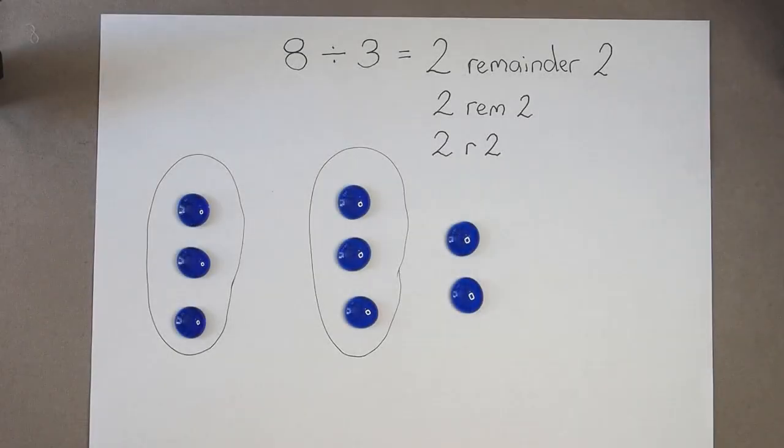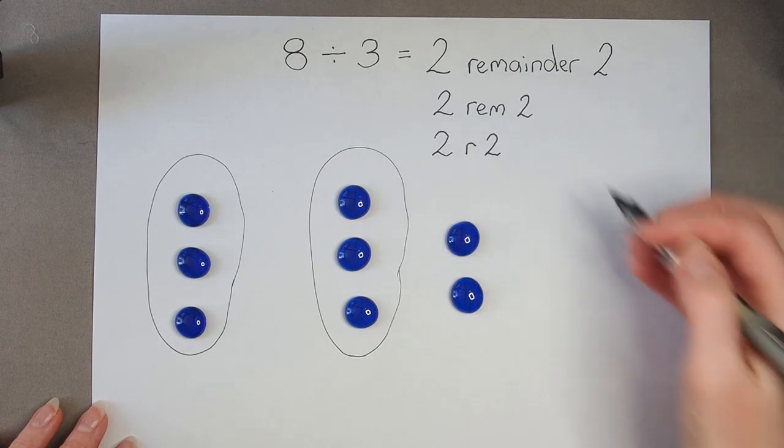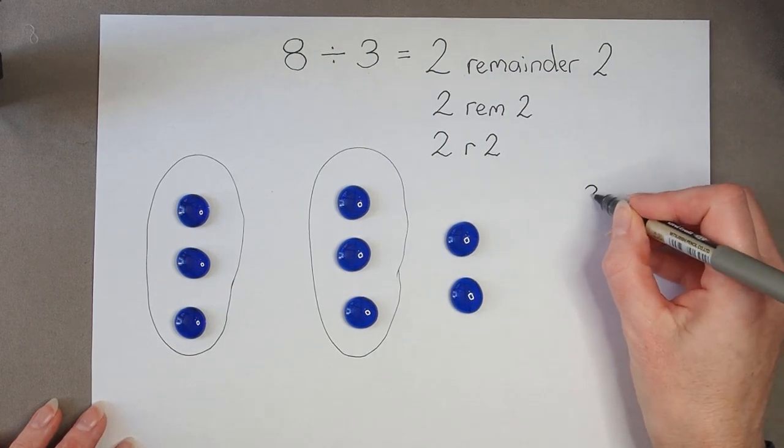So if we didn't want to use counters to count this calculation, then we're just using our tables. And we know we're counting in 3's. So if I write down the multiples of 3.